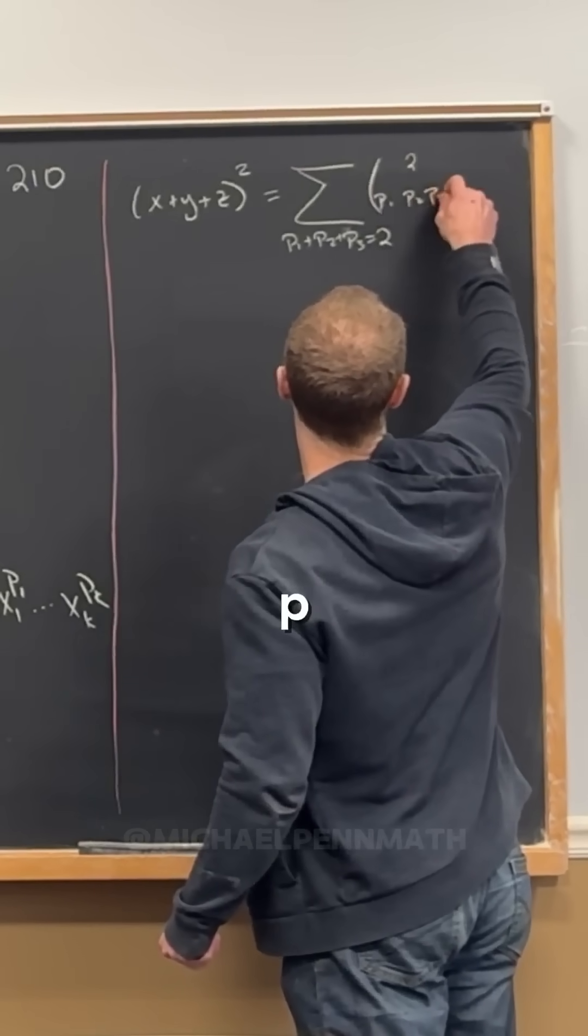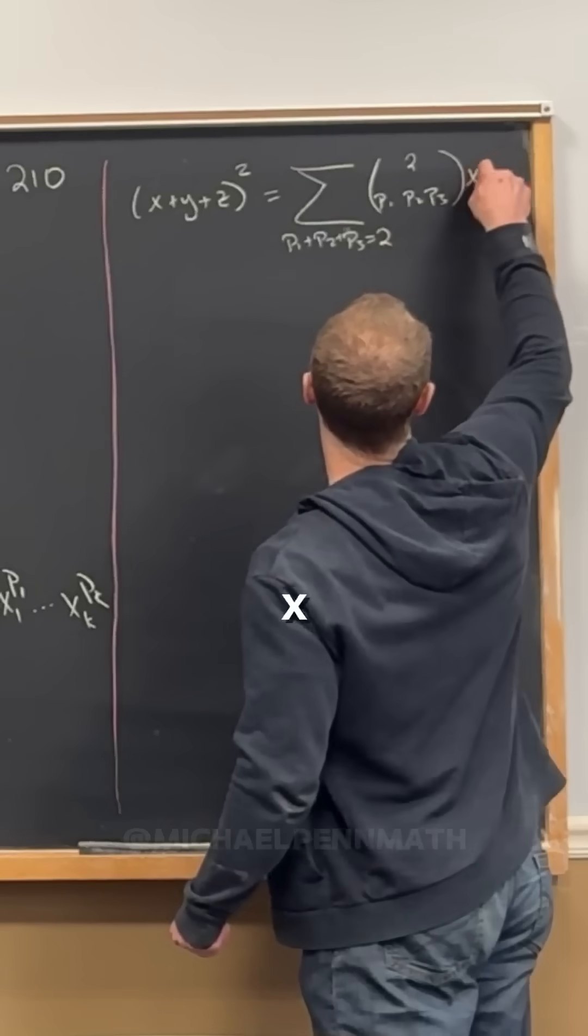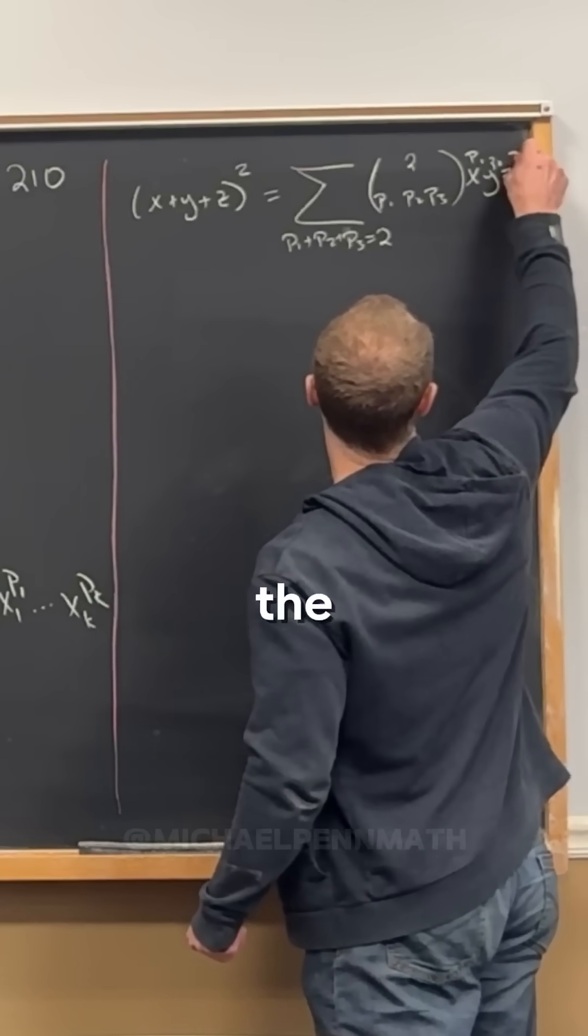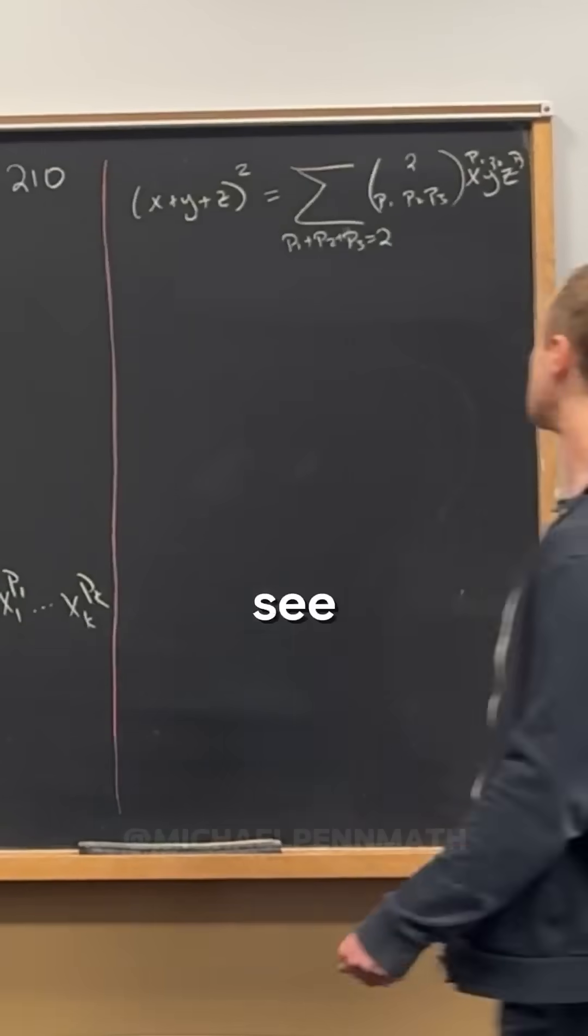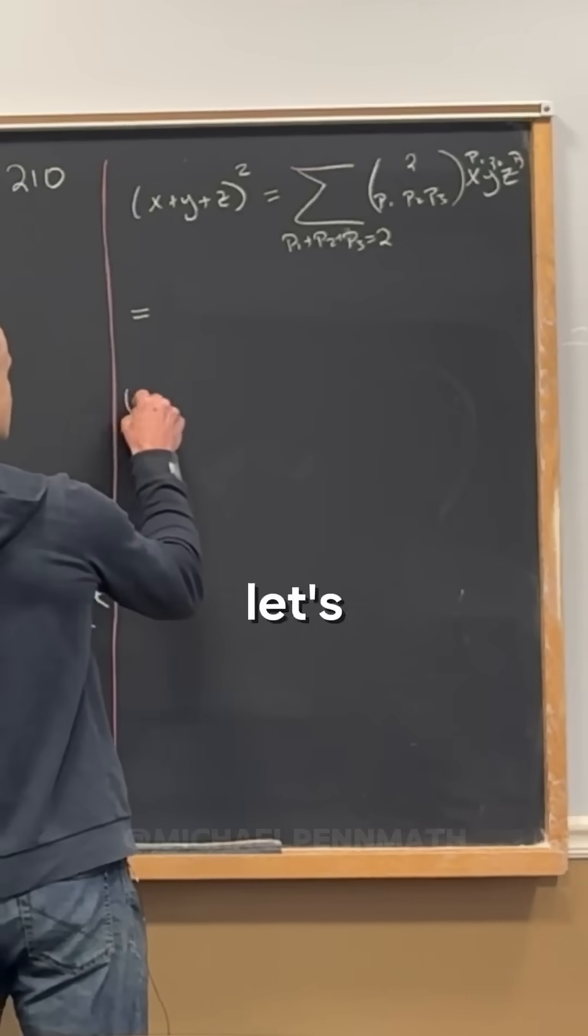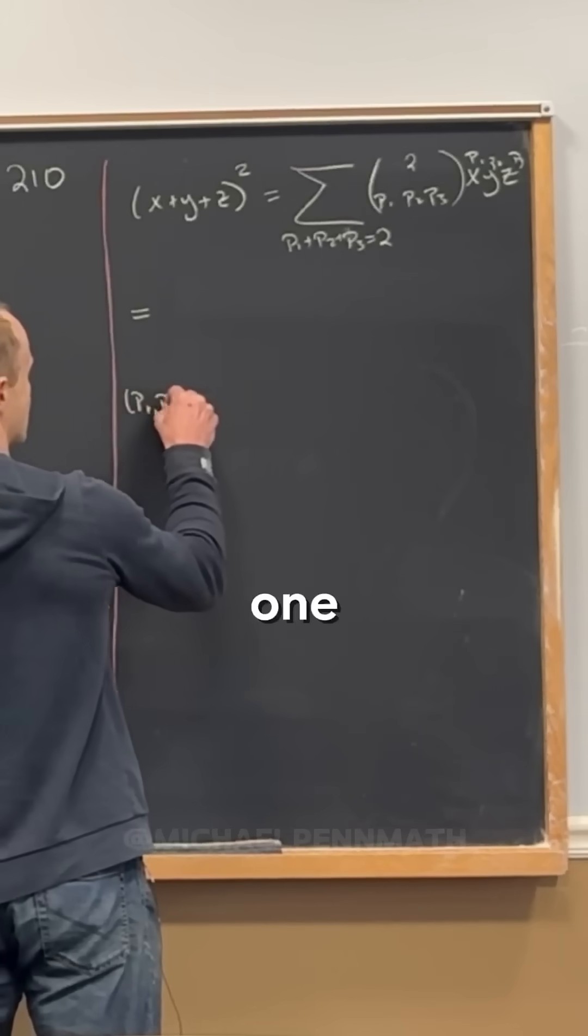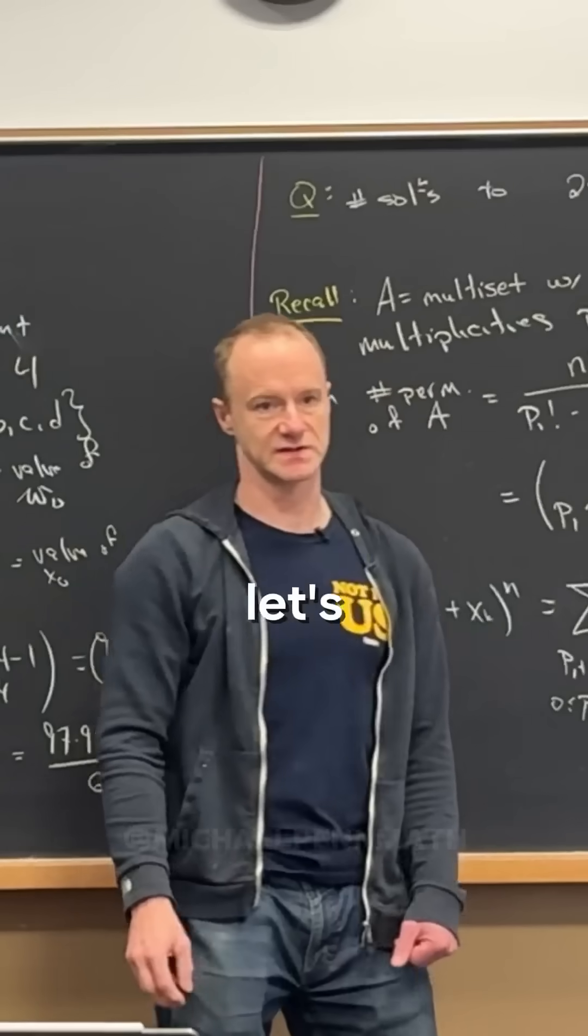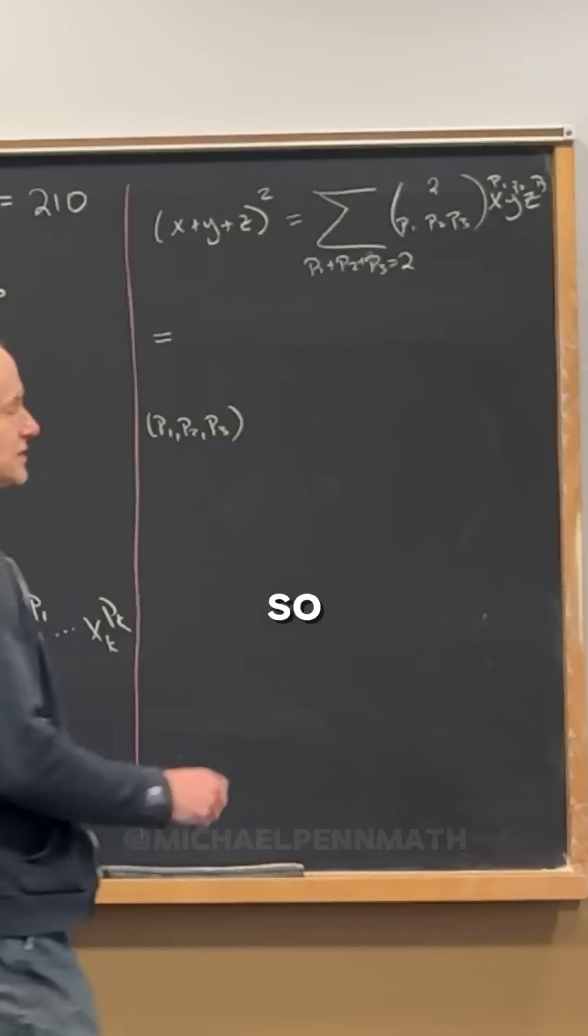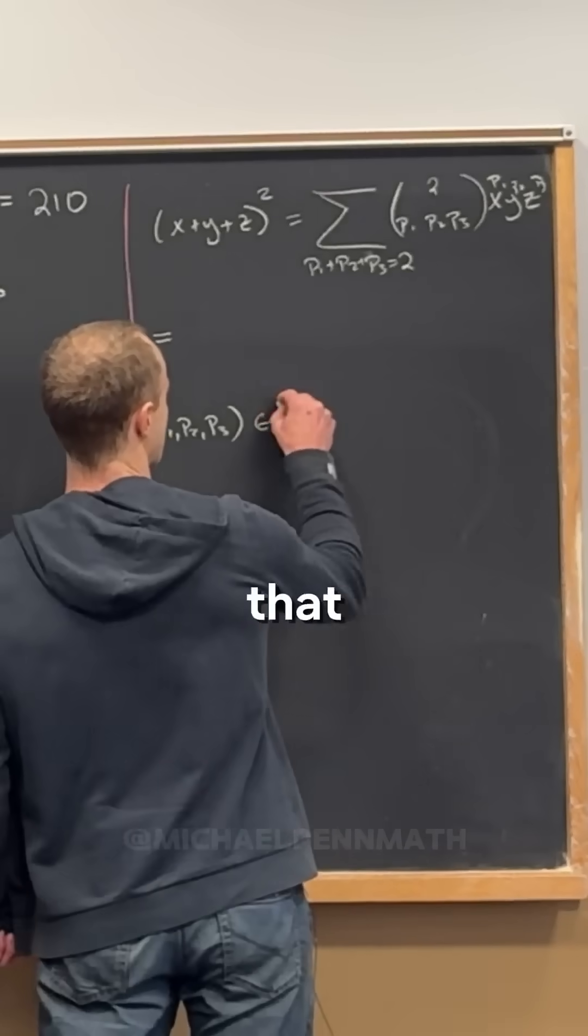p1, p2, p3, x to the p1, y to the p2, z to the p3. So let's see, let's use this notation right here as we're writing this out. Let's use p1, let's say it's an ordered triple, right? So let's think about the ordered triples that we're summing over.